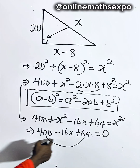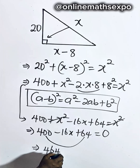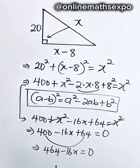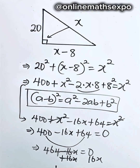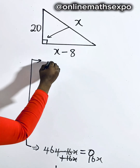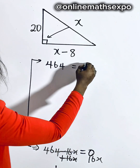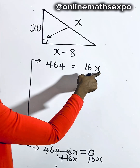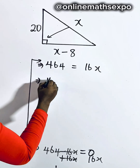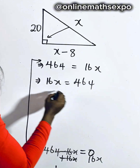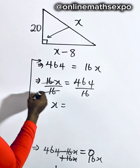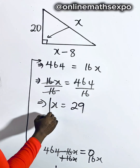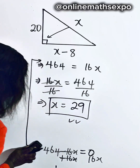We can add the constant terms together — they are like terms — giving us 464 minus 16x equals 0. Now add 16x to both sides; this cancels on the left. So we now have 464 equals 16x. To get x, divide both sides by 16. This gives us x equals 29. It means the value of x for this question is 29.